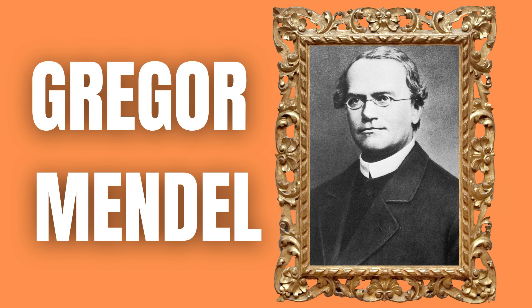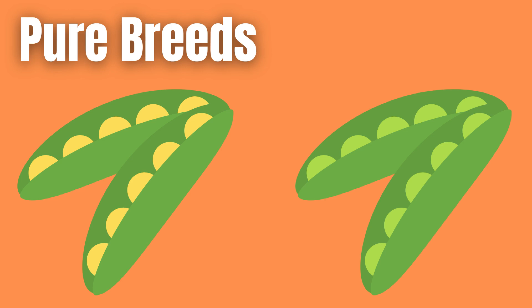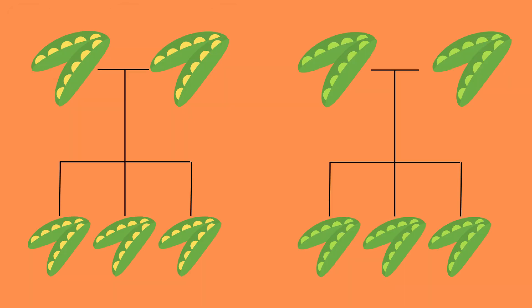Gregor Mendel came to understand the basics of trait inheritance by crossing a pure yellow pea breed with a pure green pea breed. The term pure simply means that this breed of peas only produces more peas of the same color when cross-pollinated with itself.